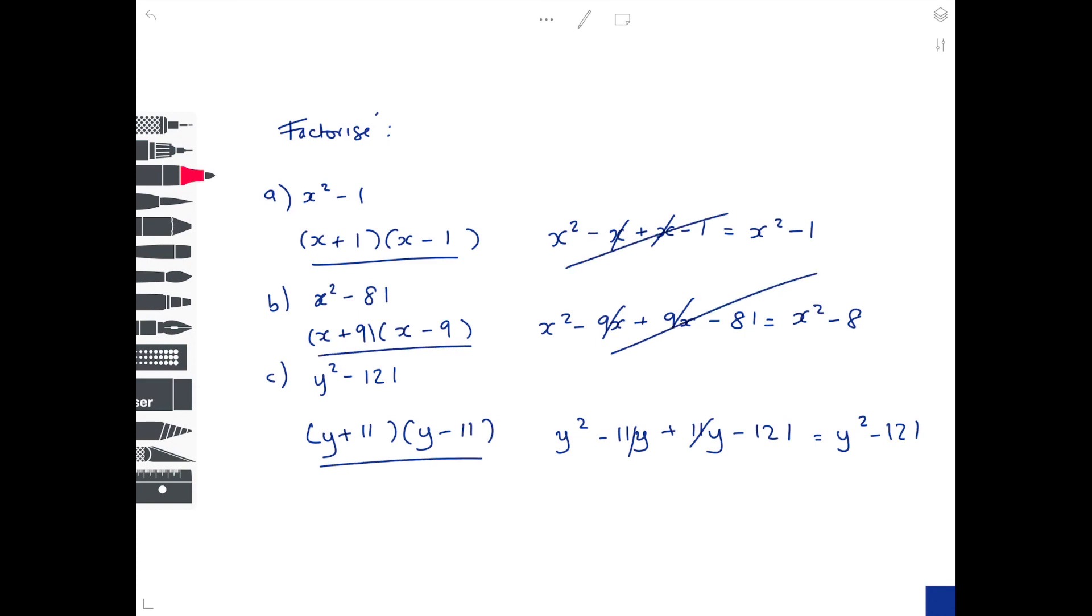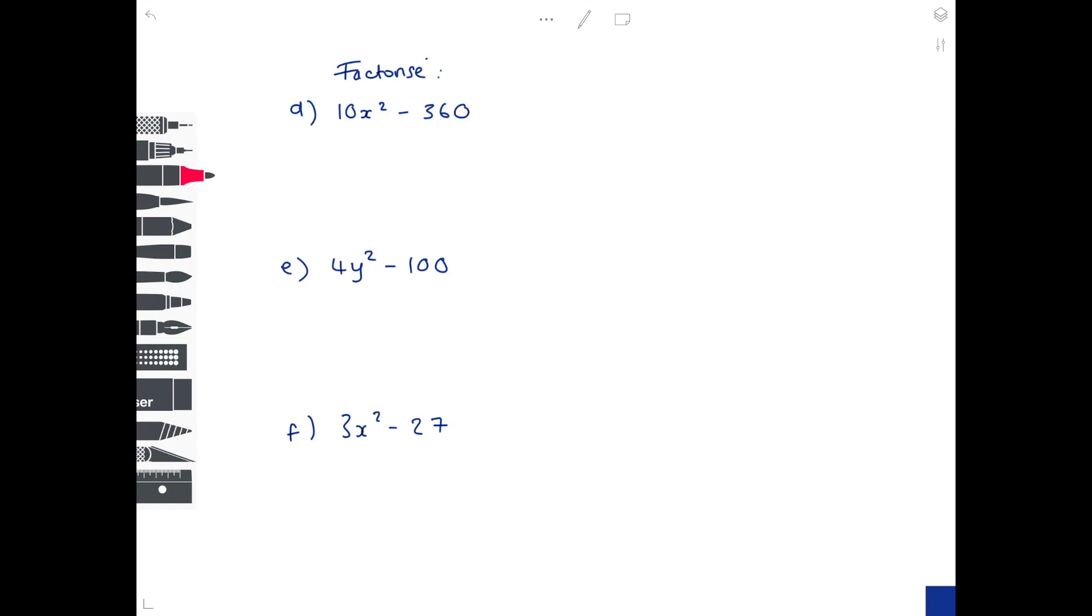So remember these answers here that I'm underlining are your answers. These ones over here are just proving that you're correct. We're getting slightly trickier now because we have a coefficient in front of the x squared or y squared term. So let's start by factorizing by looking at our terms and working out what factor we can bring out to the front. So what is common in both 10x squared and minus 360? Well, they're both factors of 10.